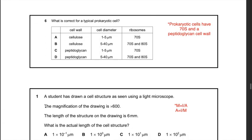Question 20: what is correct for a typical prokaryotic cell? Prokaryotic cells have 70S ribosomes and a peptidoglycan cell wall — not cellulose, which is only present in plant cell walls. Looking at C and D: 70S ribosomes are present in prokaryotic cells, and prokaryotic cells do not have a nucleus. Therefore the answer is C.